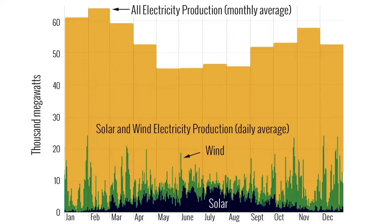The unreliability and intermittency of solar and wind can be seen by looking at Germany, which reported that 74% of the country's power needs in 2013 were generated by renewable energy. Yet in reality, much of Germany's actual electricity was provided by solar and wind backed up by fossil fuels.